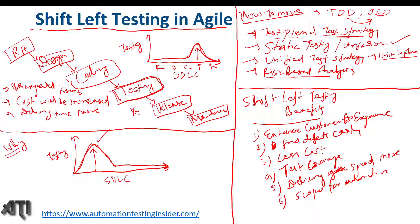It also increases the quality of the software. And one more benefit is less production issues. So in total, we have eight advantages: enhanced customer experience, find defects early, less cost, more test coverage, greater delivery speed, scope for automation, increased software quality, and less production issues.